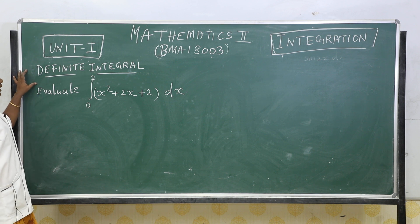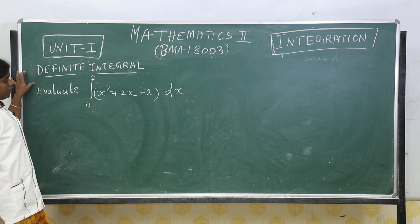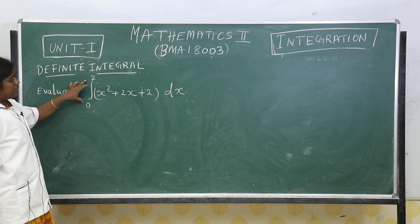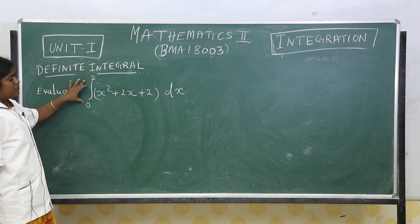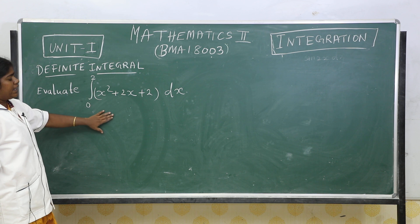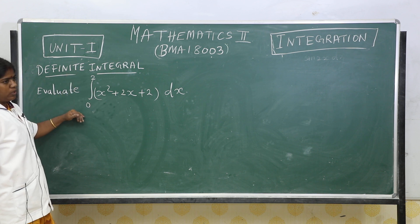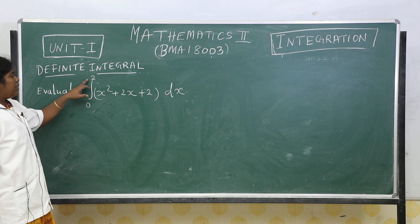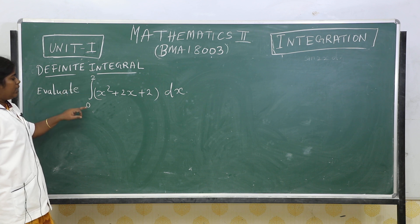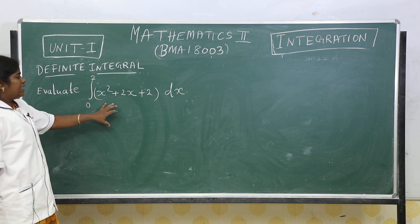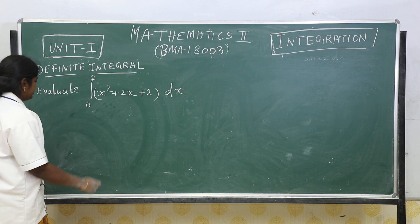The definite integral evaluates a function using the limit value. First of all, integrate the function. The upper limit is equal to 2 and the lower limit is 0. Next, solve the upper limit minus the lower limit to get the answer.